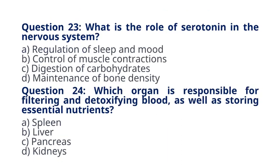Question 23. What is the role of serotonin in the nervous system? A. Regulation of sleep and mood. B. Control of muscle contractions. C. Digestion of carbohydrates. D. Maintenance of bone density. The correct answer to question 23 is option A. Regulation of sleep and mood. Explanation: Serotonin is a neurotransmitter that plays a role in regulating mood, sleep, and appetite.